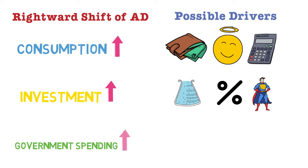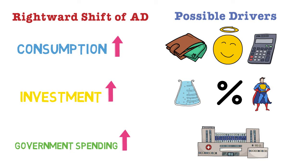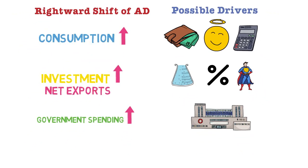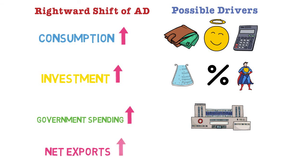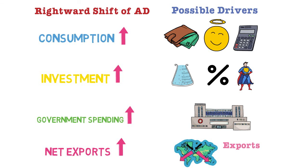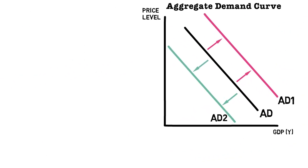The next concept that can shift the aggregate demand curve rightward is government spending. If governments borrow to spend on a new motorway or a new hospital, we call this expansionary fiscal policy, and this shifts the AD curve to the right. Finally, if net exports increase — meaning the country is becoming more competitive, perhaps because the cost of doing business has decreased — exports increase. If imports stay relatively small and exports are larger, net exports increase and the aggregate demand curve shifts to the right.